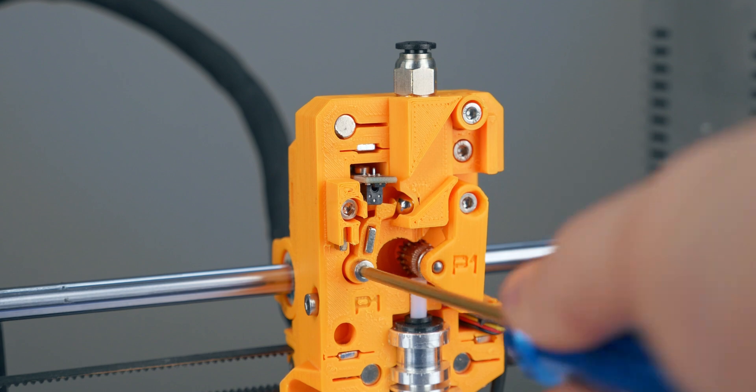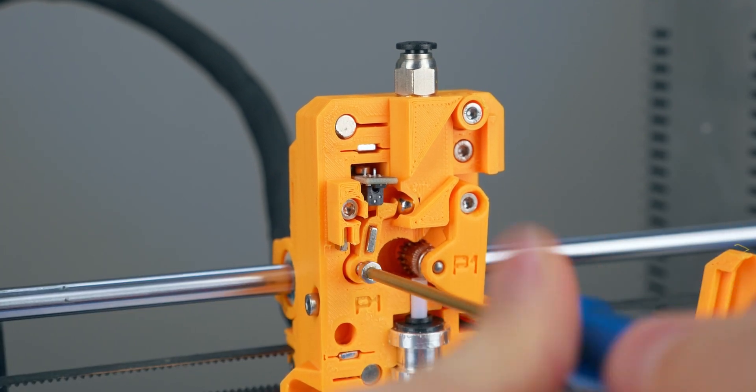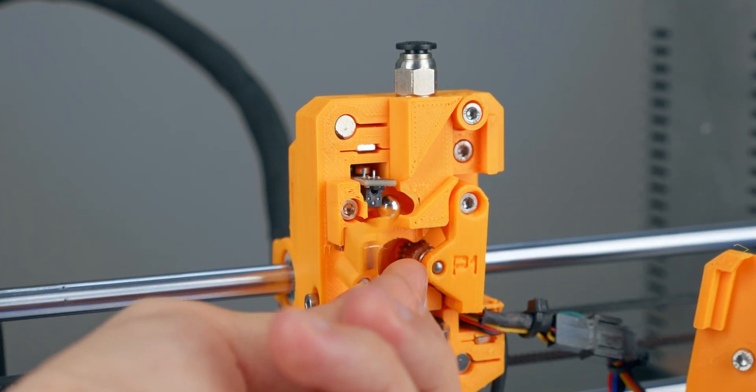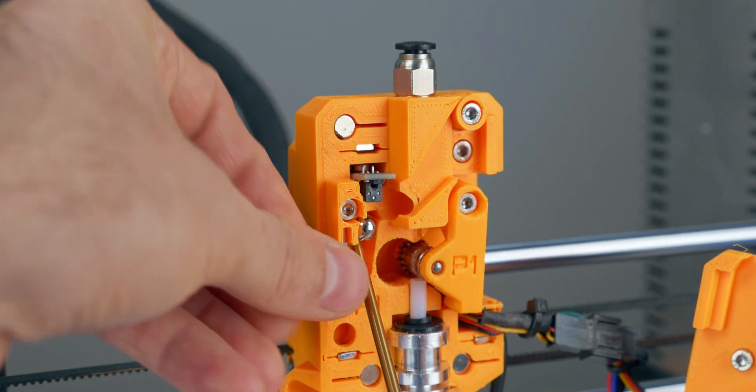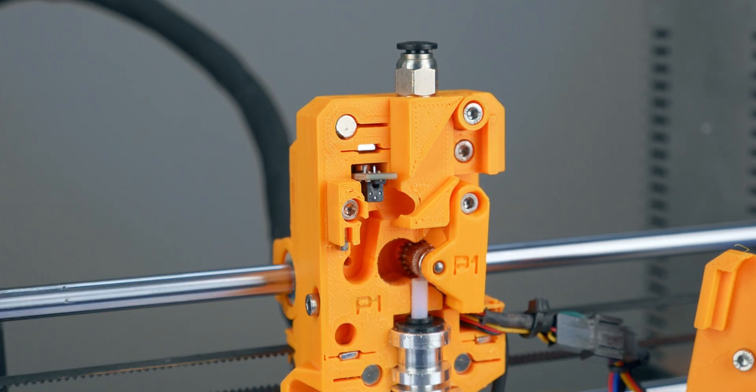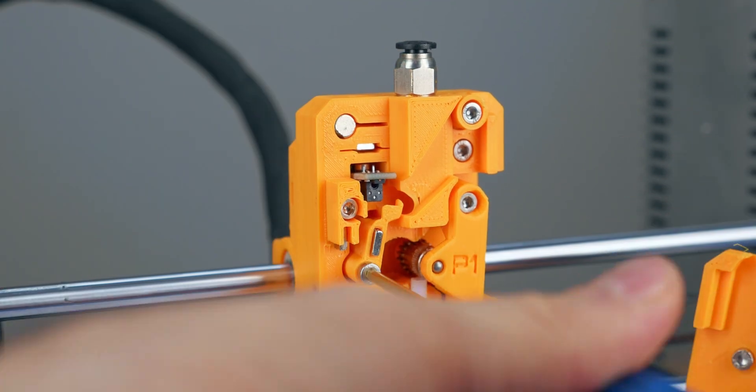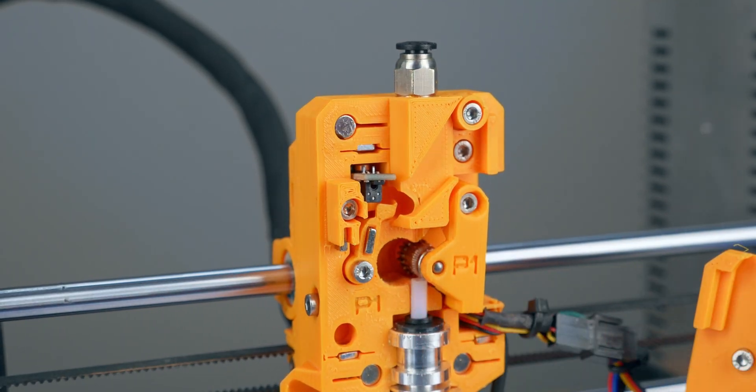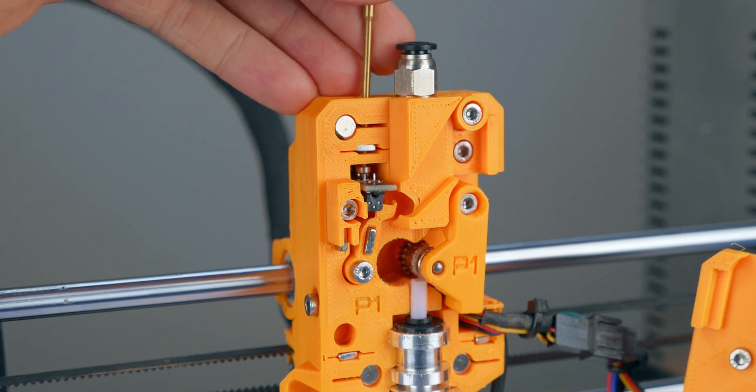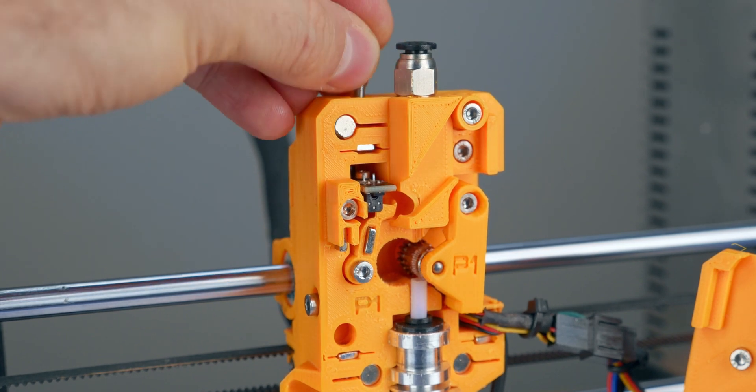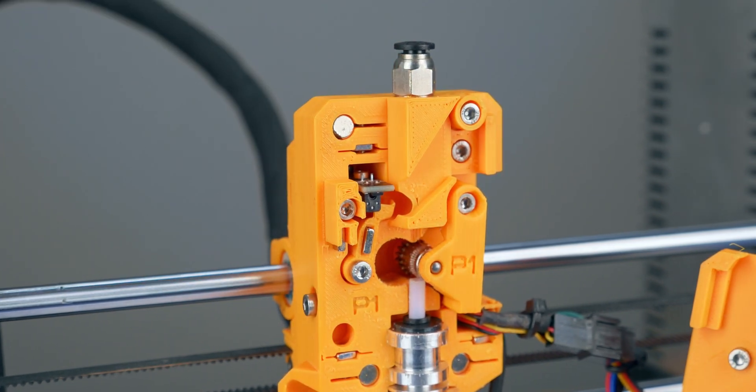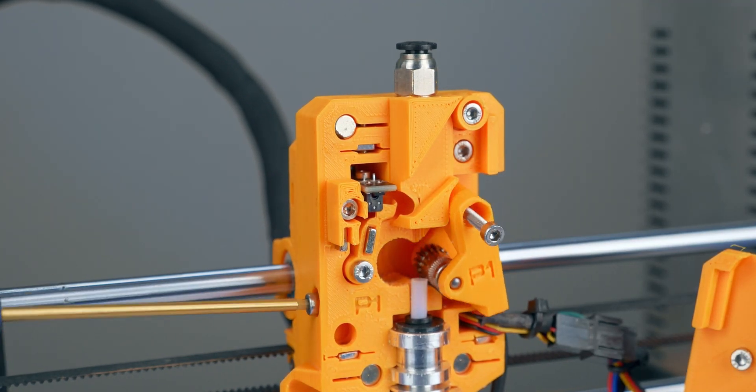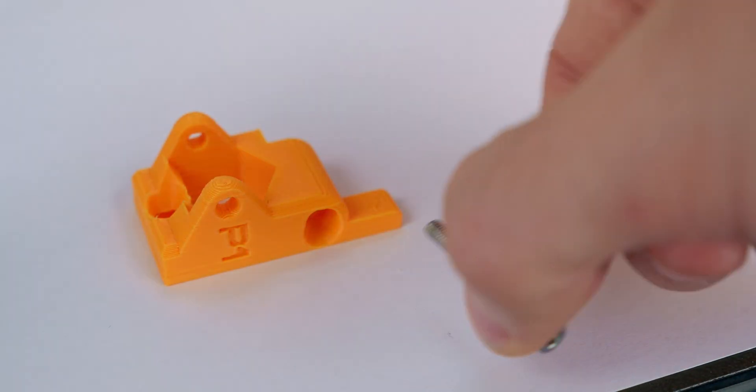If you can't take the ball out yet, unscrew and take out the sensor lever carefully not to damage the sensor, then take out the steel ball. Follow the steps in reverse to install back all the screws. Then replace the idler door with the Multimaterial version, carrying over all the metal parts.